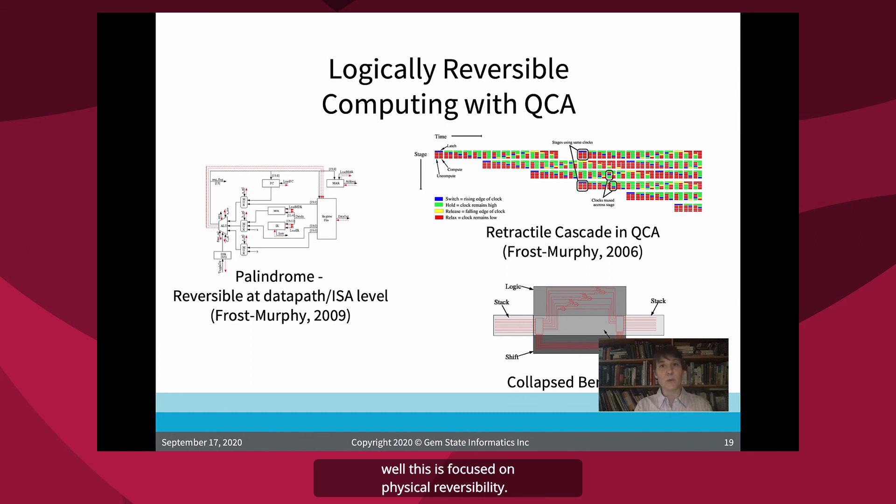There's also QCA lends itself to logical reversibility. And of course, if you have, well, this is focused on physical reversibility. If you compare the logical reversibility in a physically reversible system, now again, that can lead to extremely low power dissipation, which is very, very interesting. So there's actually been quite a bit of reverse of research, into doing logical reversibility with computing or logically reversible competing with QCA. We worked on designing a, a reversible, processor at, it's reversible at the datapath ISA level. It's called palindrome. At Sandia, there was some work looking at retractile cascades. We looked at a version of, Bennett clocking or a Bennett, the Bennett, Bennett's algorithm, and we call it the collapse Bennett, that again, it lends itself to a physically reversible implementation of a logically reversible problem.